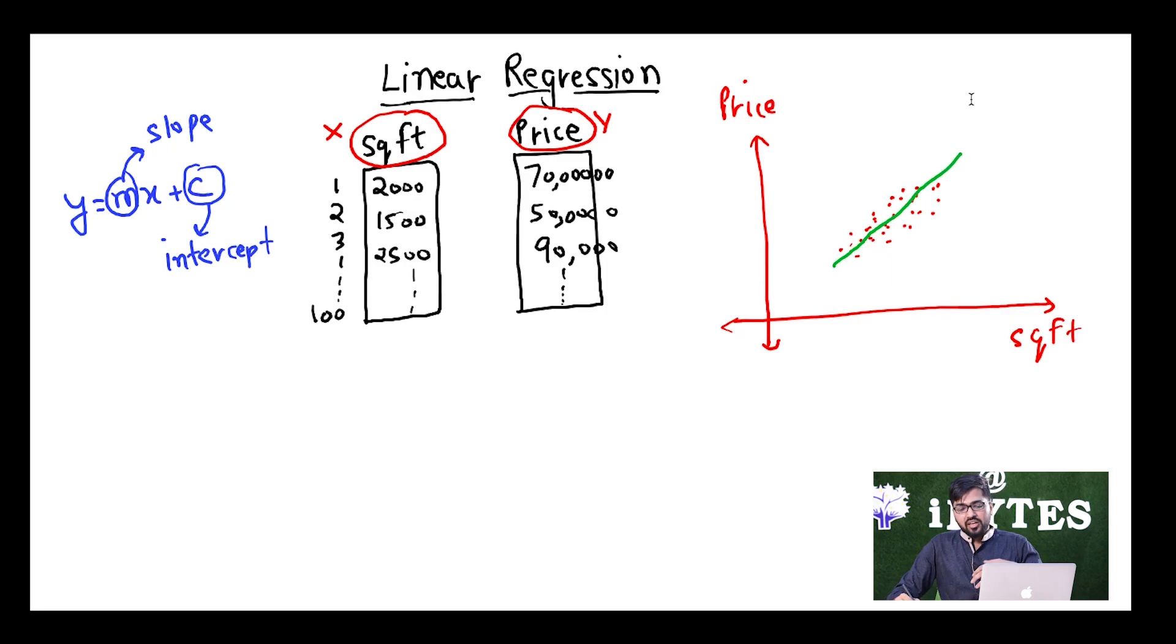A line like this is able to explain my data really well, that almost all of my data is lying very close to the line. Basically we have to try to find a line. Linear regression tries to find a line which is able to explain our training data really well, which is quite close to the training data. Obviously it cannot cover all the points but it will try to be as close to most of the points. This line is also known as best fit line.